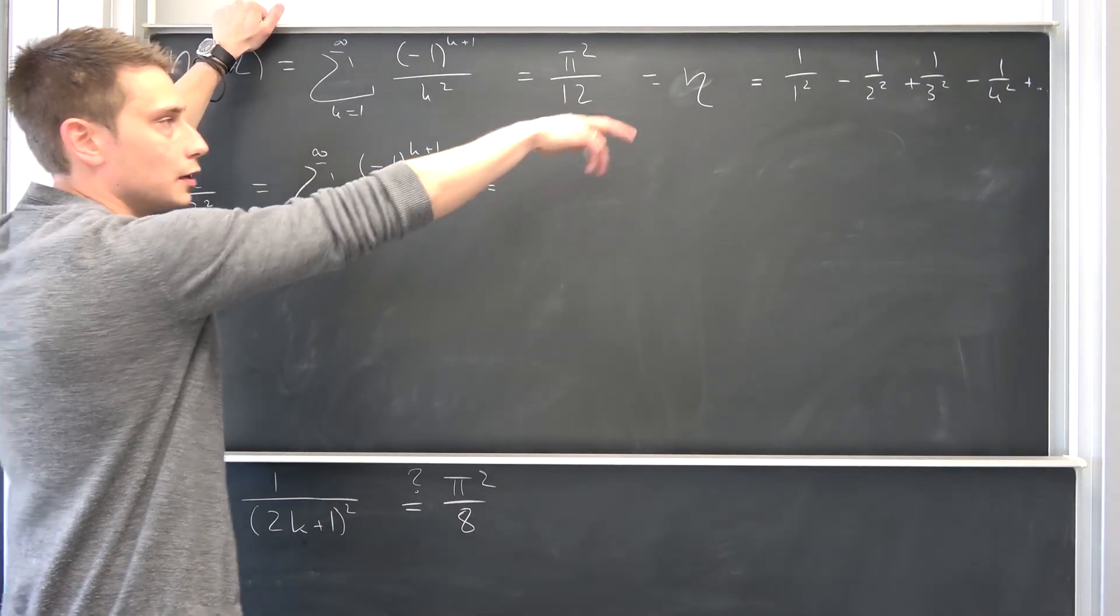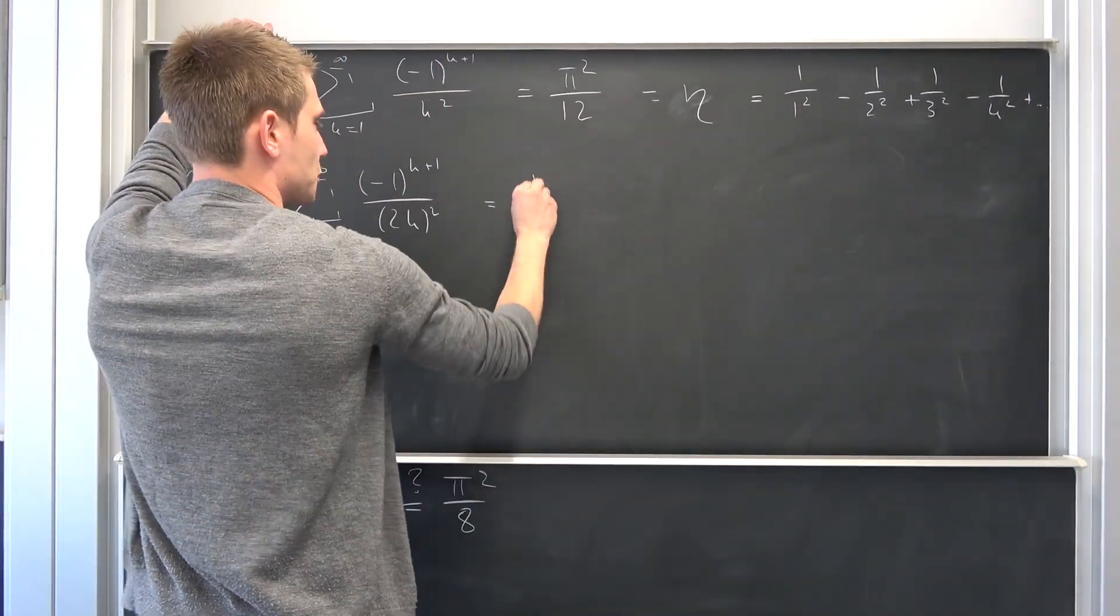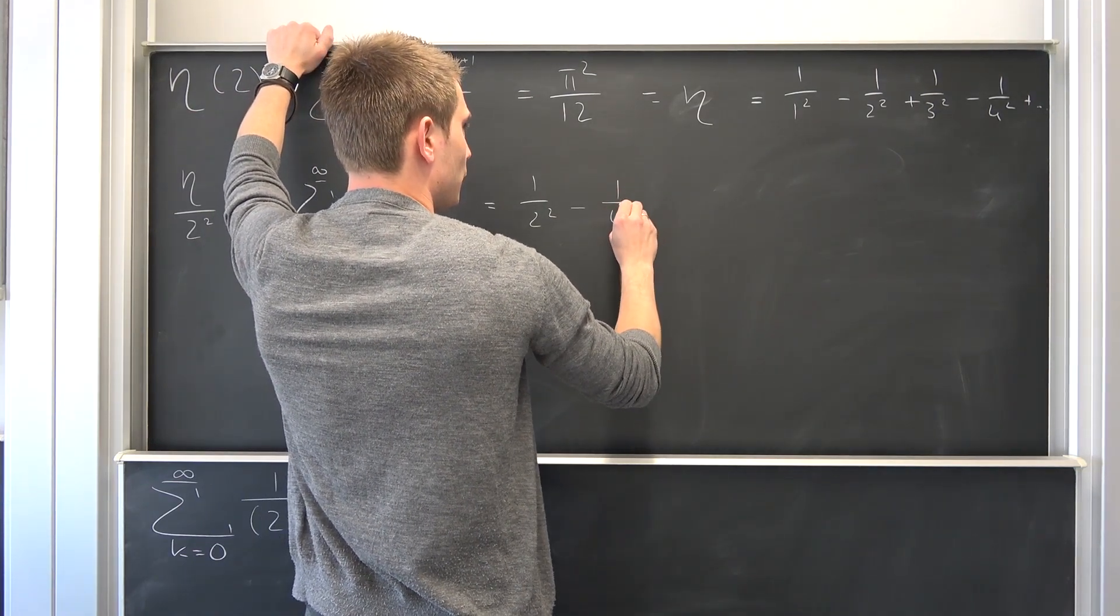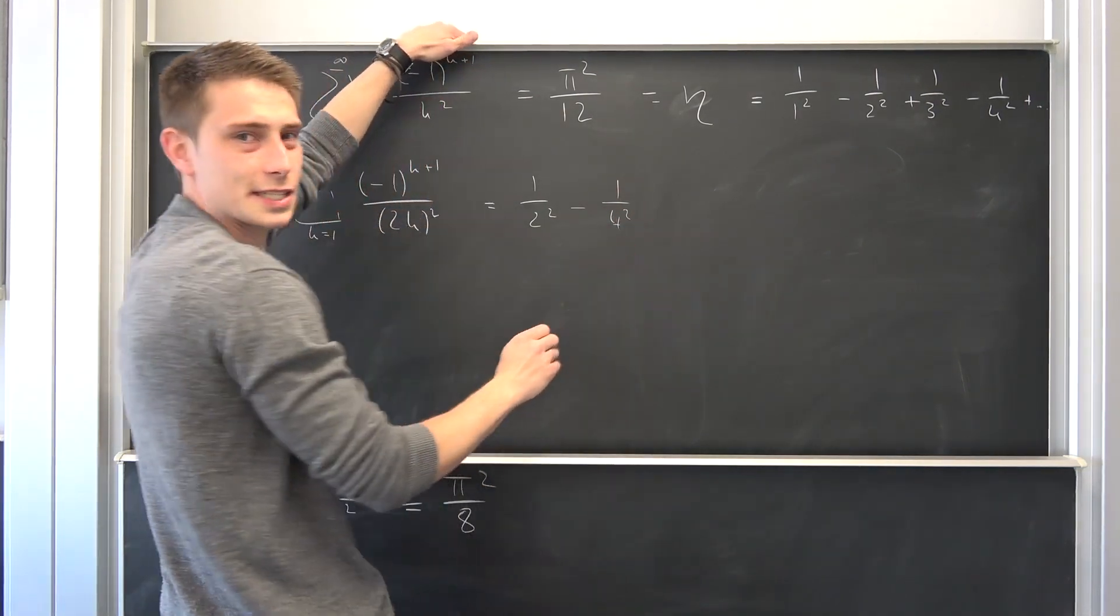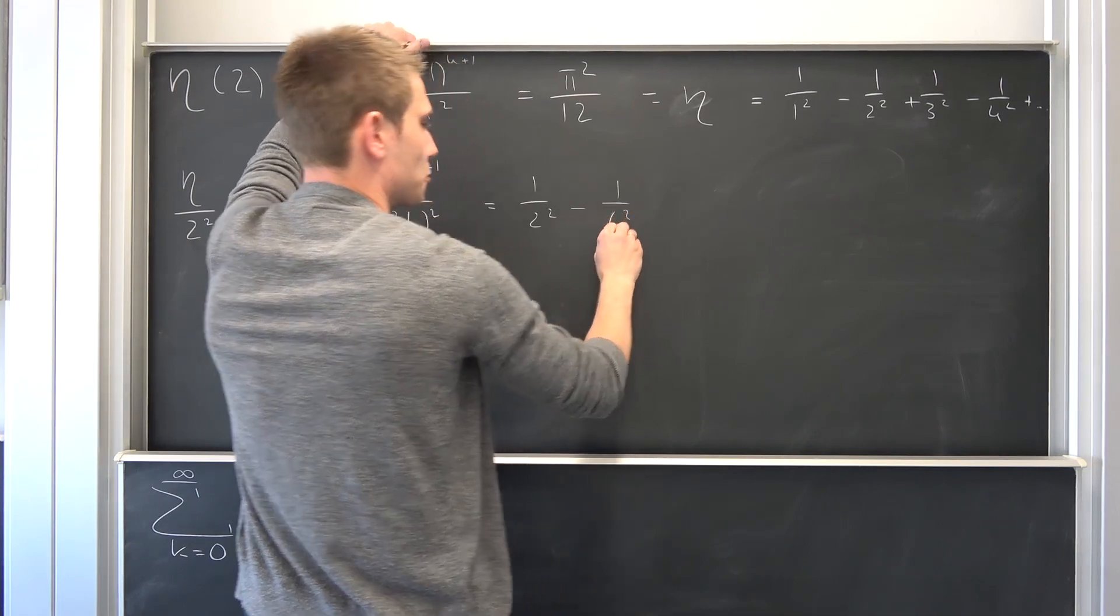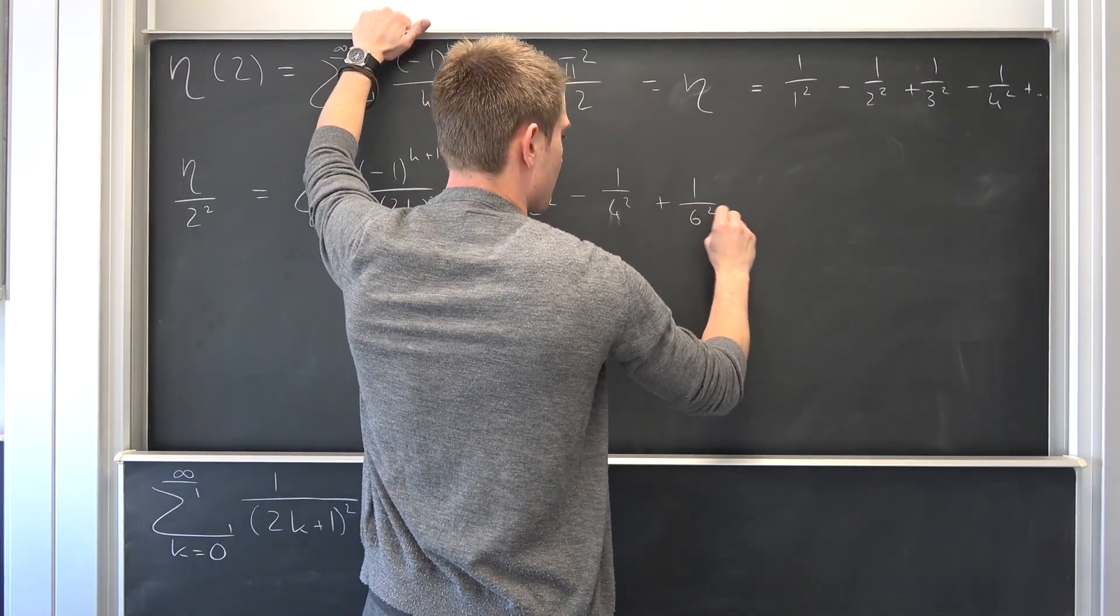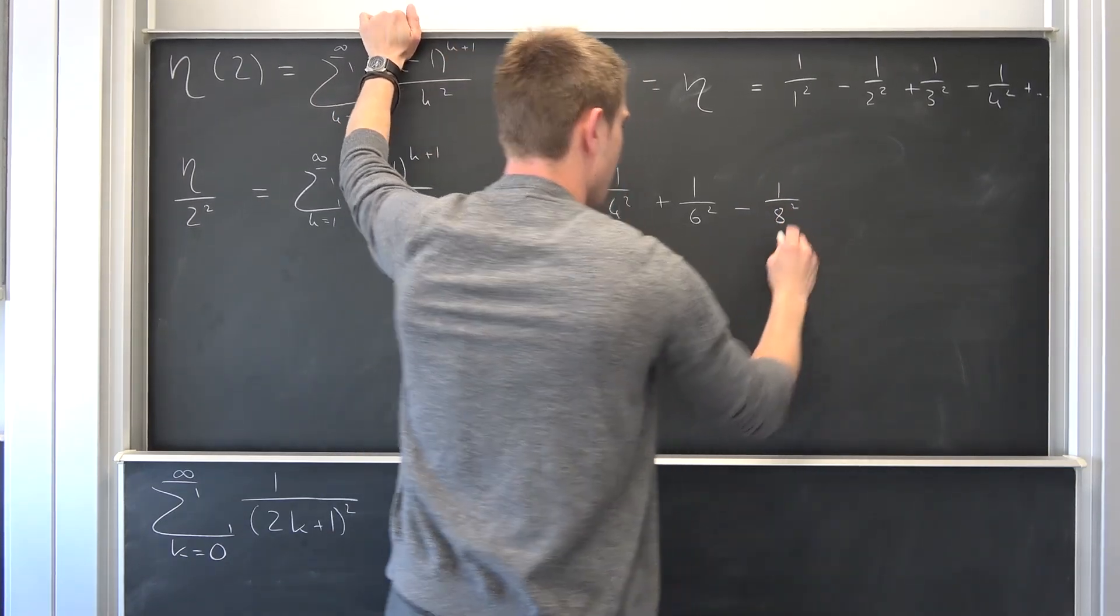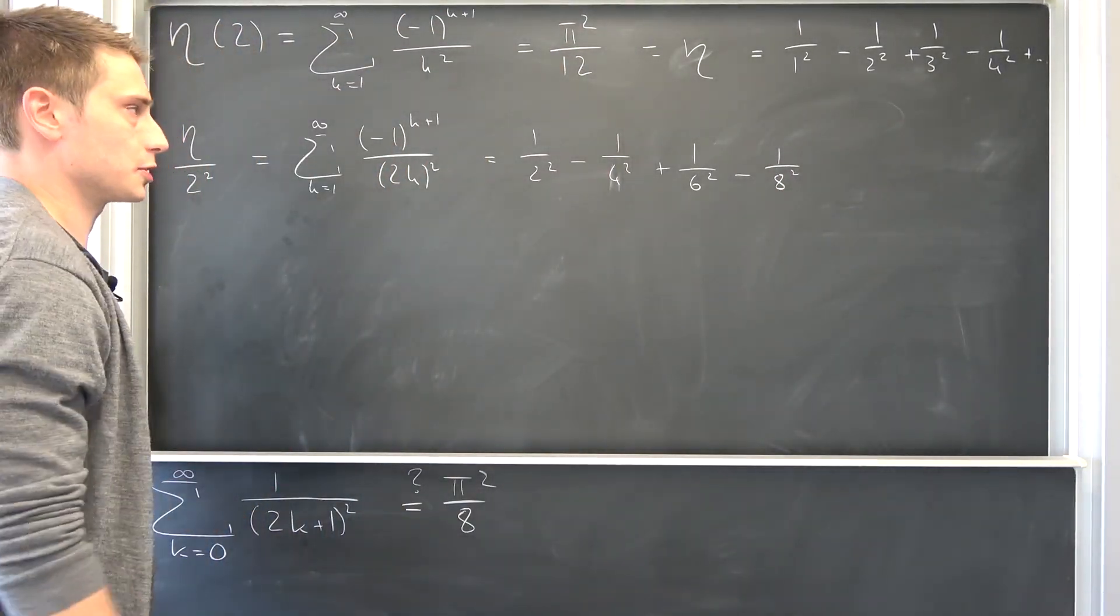Now we are multiplying everything by 2 down here. So this is 1 over 2 squared minus 1 over 4 squared. Maybe you can already see where this is actually going. That's supposed to be a 4. And then positive 1 over 6 squared. Yeah, one more, 1 over 8 squared. Now we are going to continue this process.